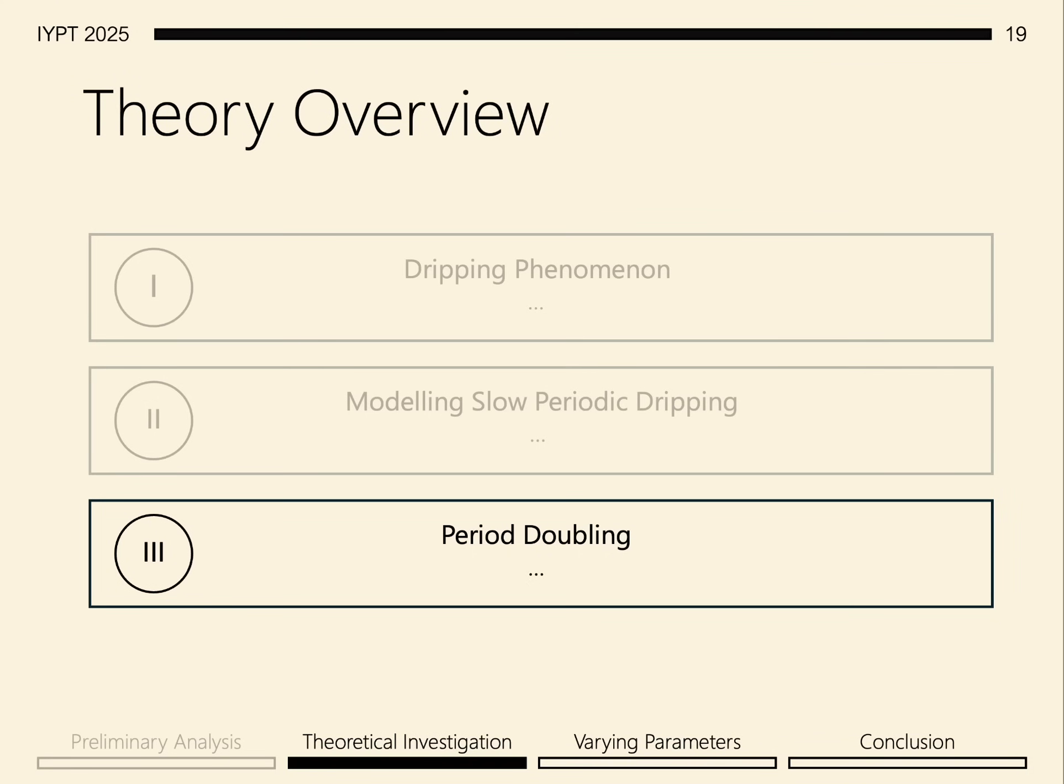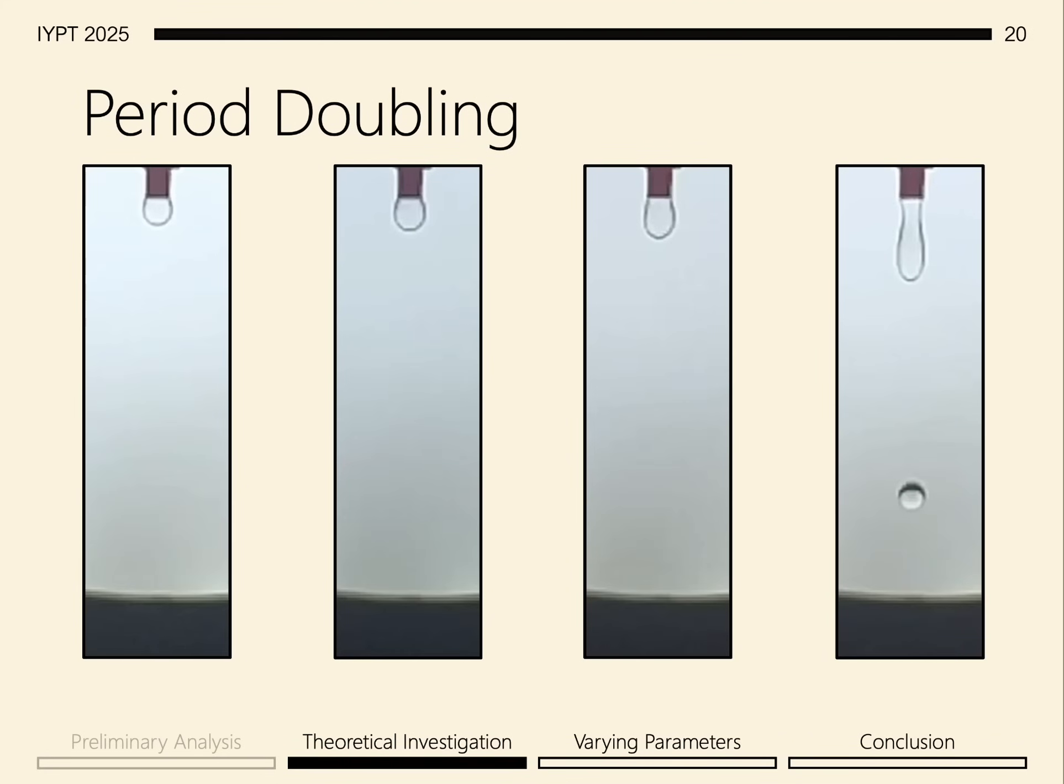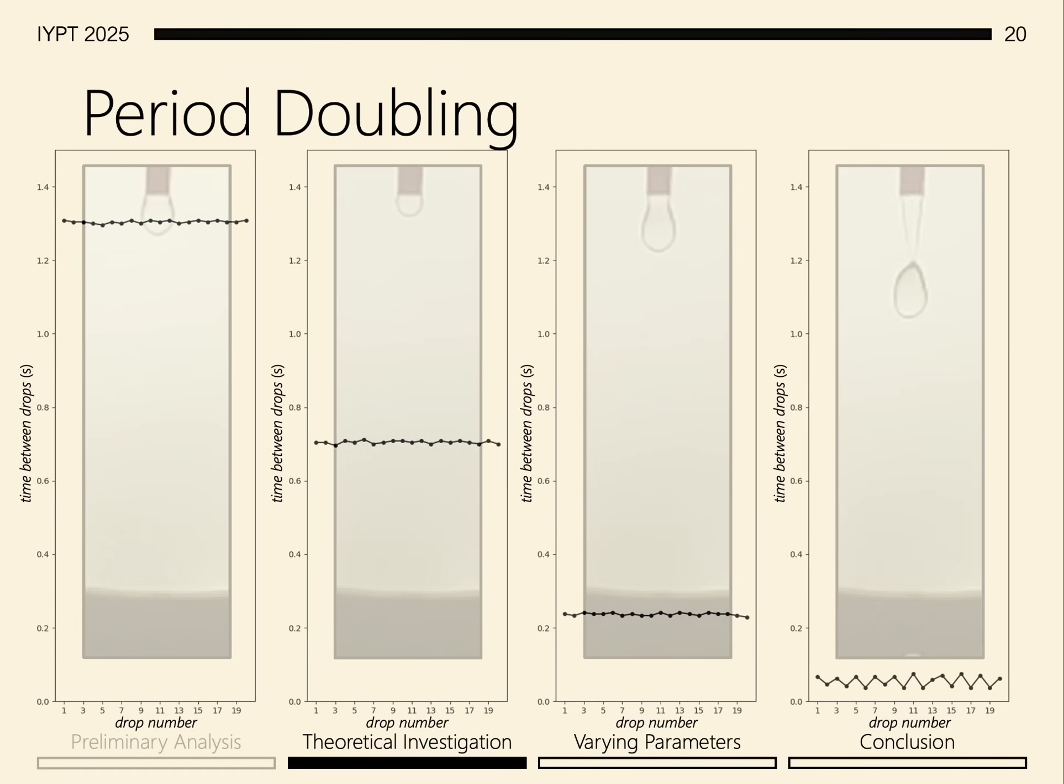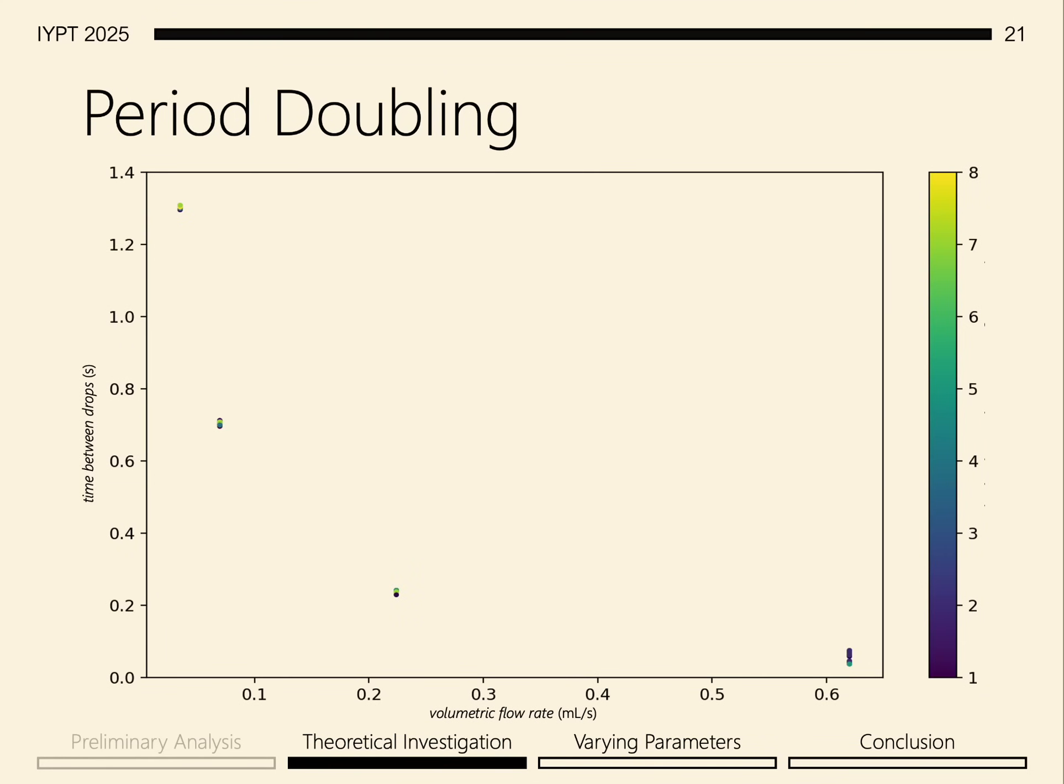Finally, let's explain why we observe period doubling at higher flow rates. Considering again the dripping at different flow rates and the corresponding time between drops, we can plot a graph of all the data points. Recall that our model suggests, roughly, that the time between drops is inversely proportional to the flow rate. Indeed, we see this good qualitative agreement between our model and data.